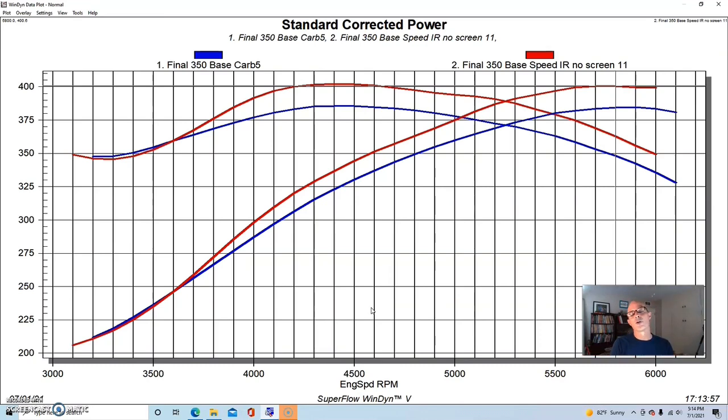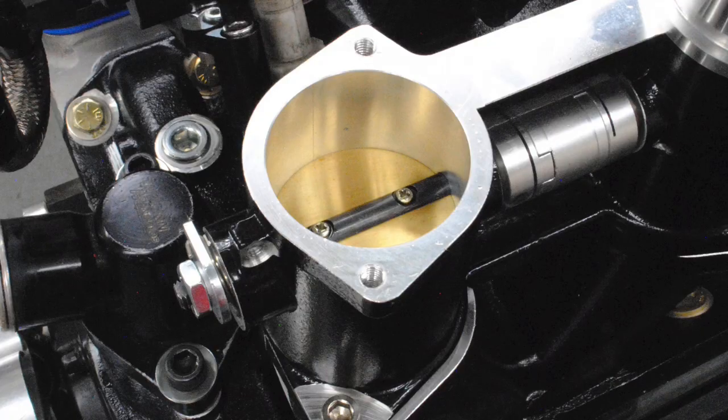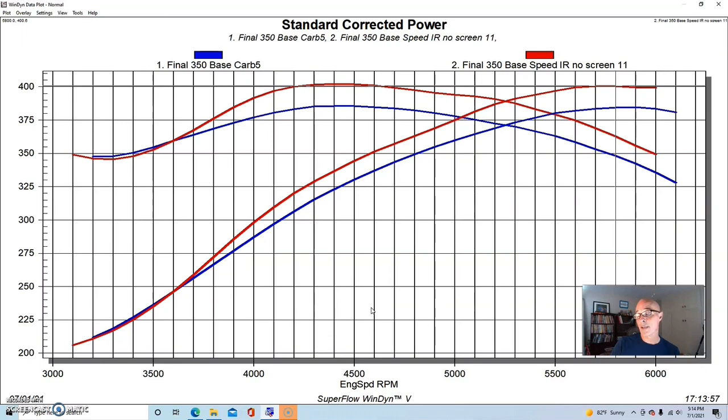Obviously in terms of airflow it's not even close comparing the airflow potential of the stack injection to the dual plane intake manifold. But really this isn't all just about airflow. It isn't like, hey let's just make a big opening and we can flow a ton of air and make a lot more power. That's not really what's happening here. As we see, we gain power by putting this stack injection on there. We gain power from 3700 RPM all the way up.